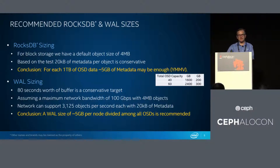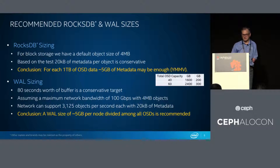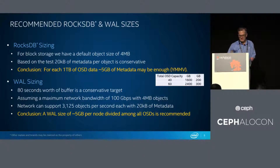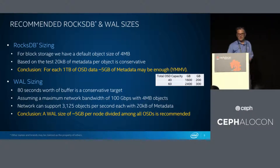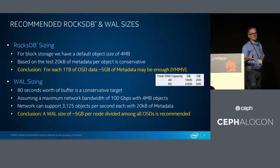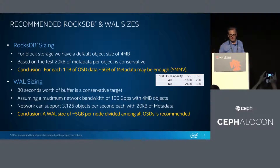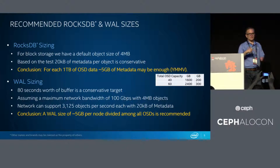It turns out — and there's some math behind this — we were going to show a spreadsheet, but in five minutes you probably don't need to watch Excel cells with a mouse moving around. You can come talk to us after and we can walk through it. Based on that, it looks like around 3,000 objects per second with 20K of metadata, working it back, comes to about five gigabytes per node divided amongst all the OSDs. So you would take that five gigs divided by — in this case six drives — and that would be the partition size you'd want to create on your Optane drive.